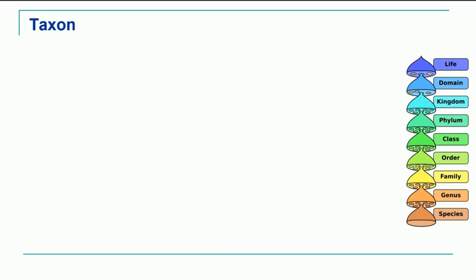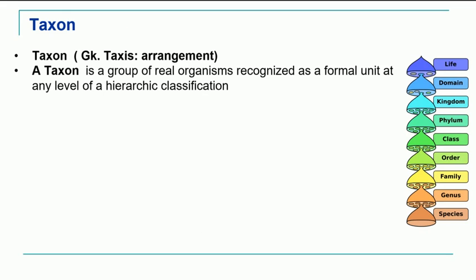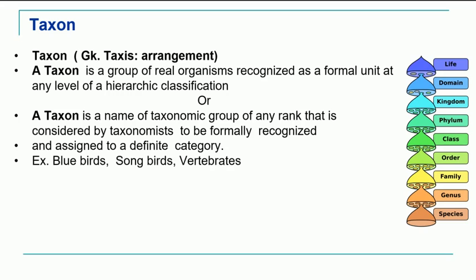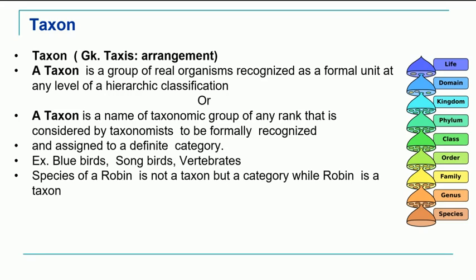Now we will look at what is meant by taxon. The literal meaning of the word taxon has a Greek origin — in Greek, taxis means arrangement. A taxon is a group of real organisms recognized as a formal unit at any level of hierarchical classification, or it is the name of a taxonomic group of any rank that is considered by a taxonomist to be formally recognized and assigned to a definite category. Words like bluebirds, songbirds, and vertebrates refer to groups of organisms — such complete objects of biological classification are nothing but taxa.